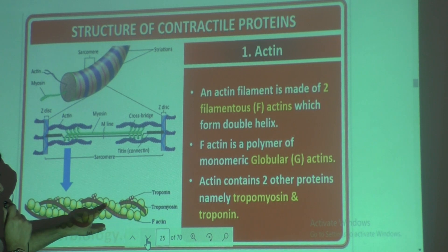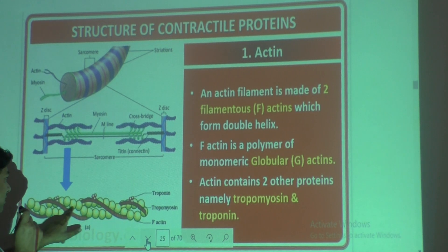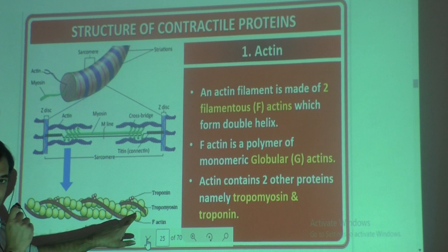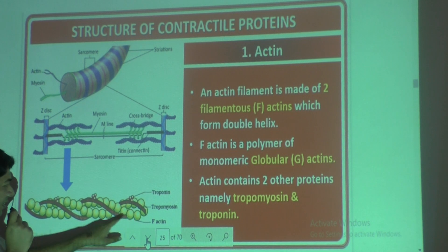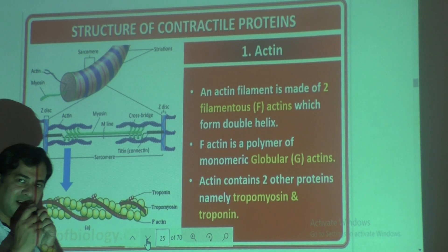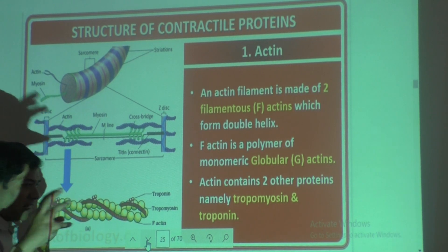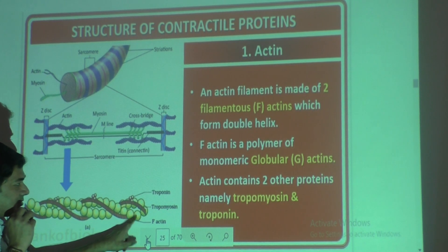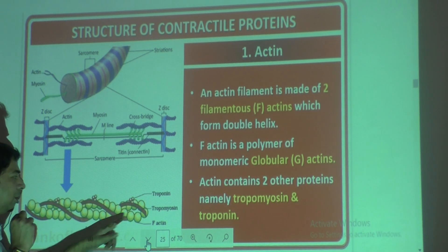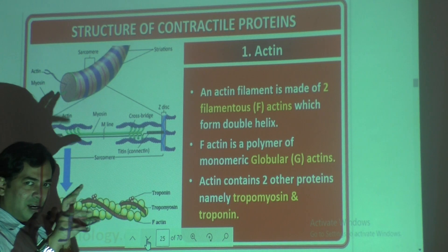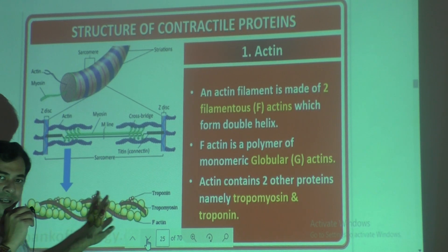F-actin is a long chain of ball-like structures. Each single ball-like structure, which is a monomer — one single unit — is called G-actin. F-actin is a polymer — it is a long chain. Each single ball-like structure which is a monomer is called G-actin, that is globular actin. Globular means round structure. So many G-actins together form one F-actin.